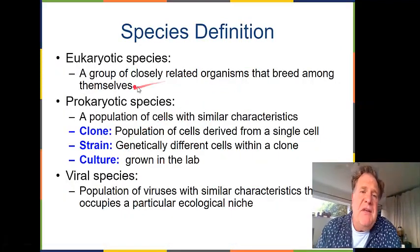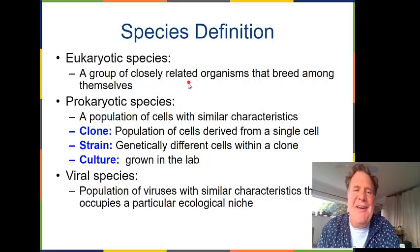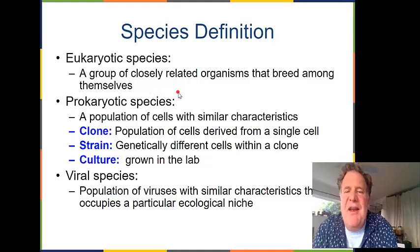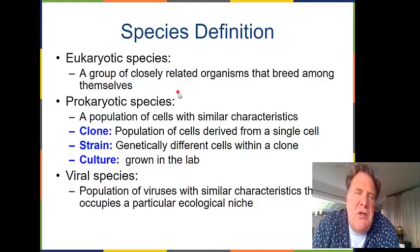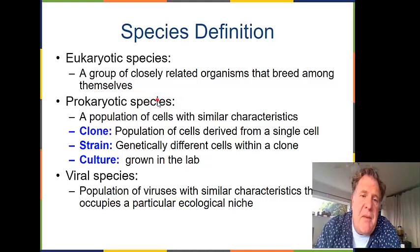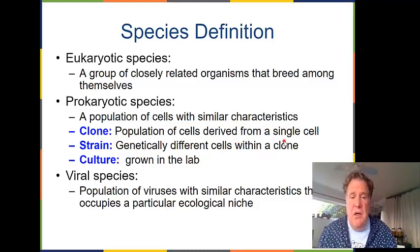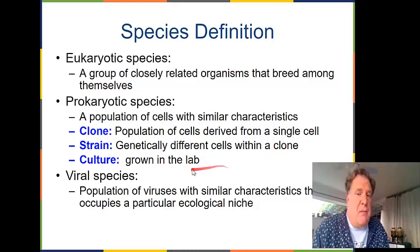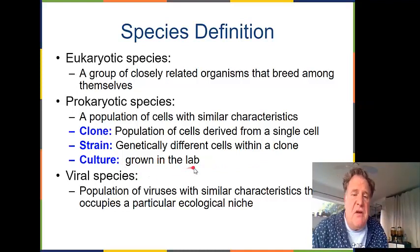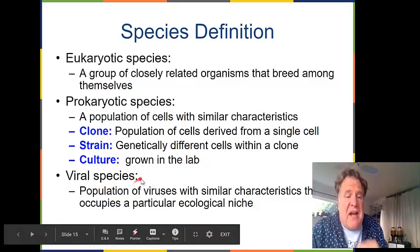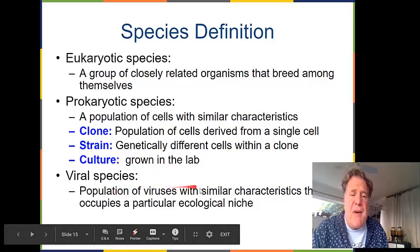Eukaryotic species are a group of closely related organisms that breed among themselves. But what do we do with microorganisms that don't necessarily have sex? In prokaryotic species, a species is a population of cells with similar characteristics. A clone is a population of cells derived from a single cell. A strain is genetically different cells within a clone — there are strains of E. coli that are pathogenic and some that are non-pathogenic. A culture is a term for bacteria you grow in the lab. Viruses also have their own species, defined as a population with similar characteristics occupying a particular ecological niche.